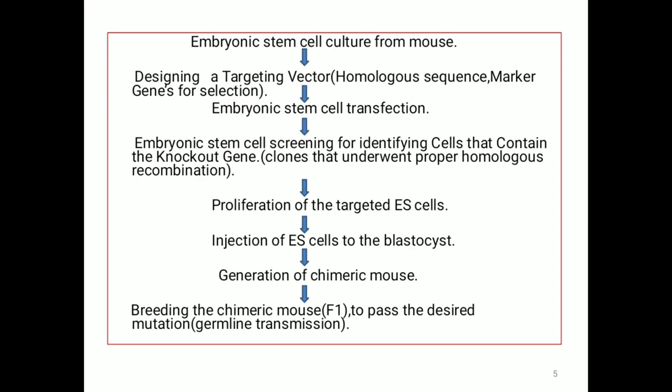Then we need to screen the embryonic stem cells to identify the clones that underwent proper homologous recombination. We will proliferate those clones and inject that embryonic stem cell into the blastocyst. In the F1 generation, we will get a chimeric mouse — meaning it contains both normal type cells and genetically manipulated knockout cells. But we need a completely knockout mouse, i.e., a homozygous knockout. For this, we will crossbreed the chimeric mouse to pass the desired mutation via germline transmission.